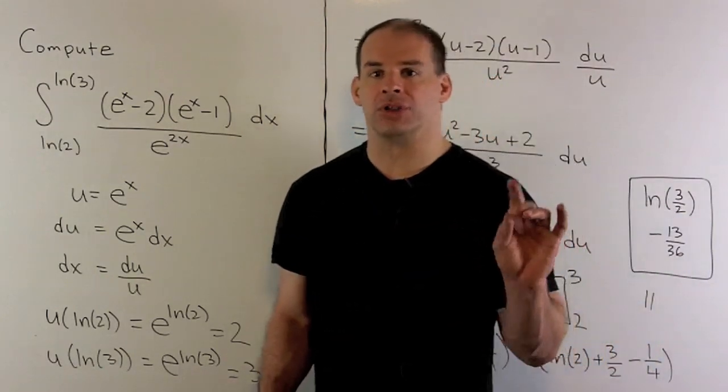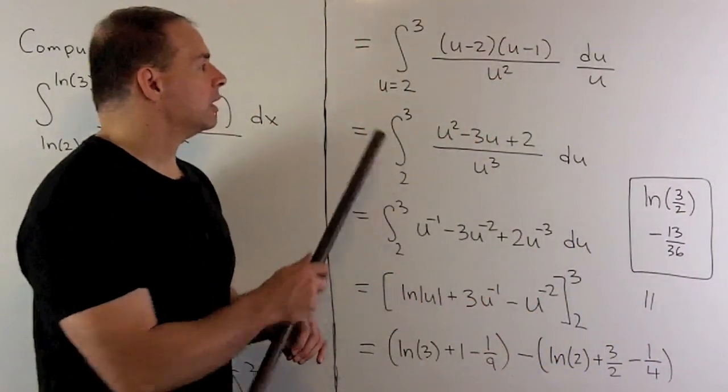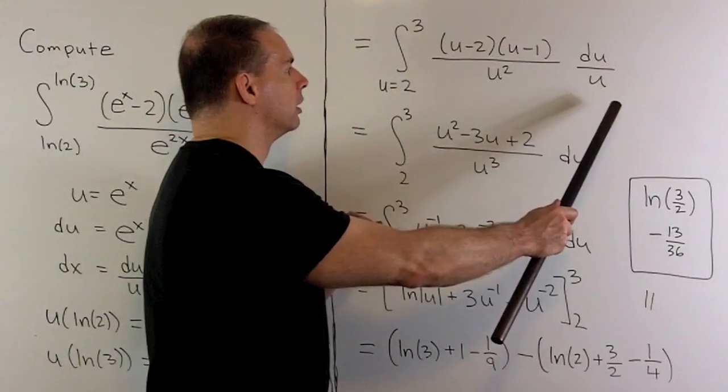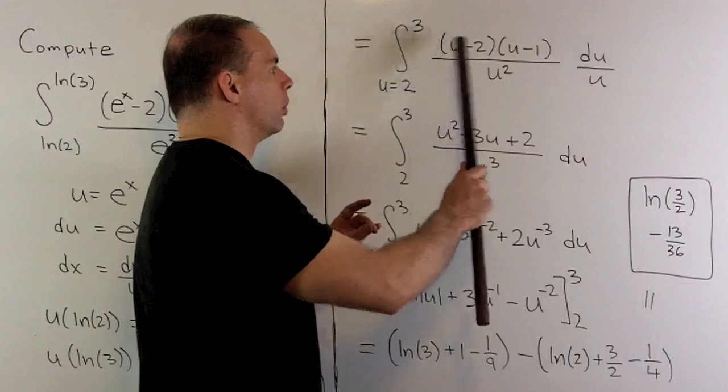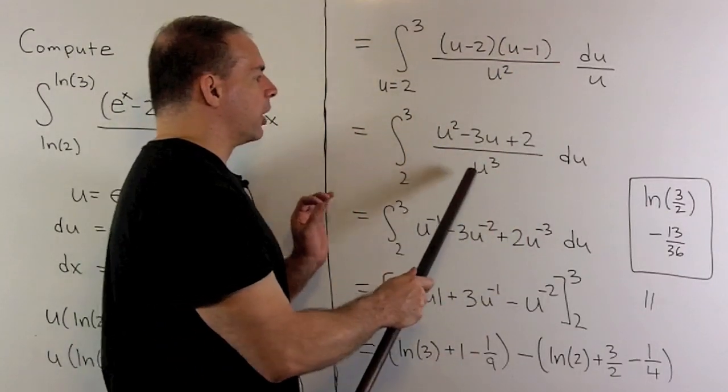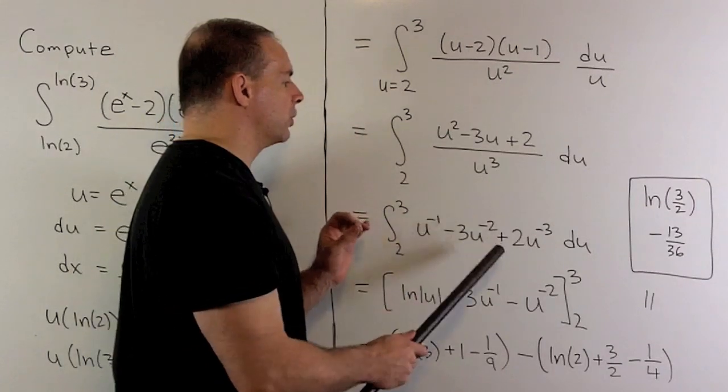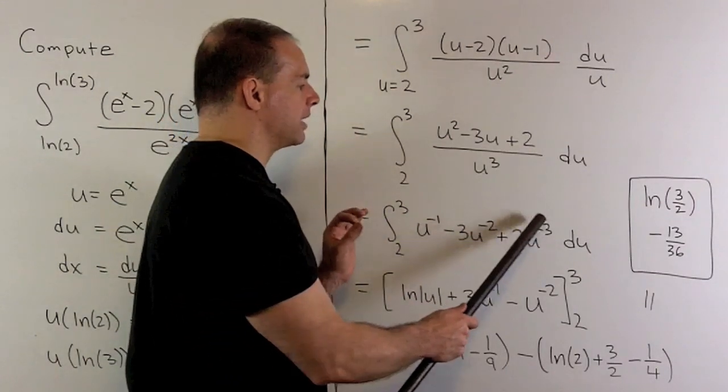We push everything over in terms of u. So we substitute. And then we get this integral here. Now, multiply through. Then we divide by our u cubed. So I'll have u to the minus 1 minus 3u to the minus 2 plus 2u to the minus 3.